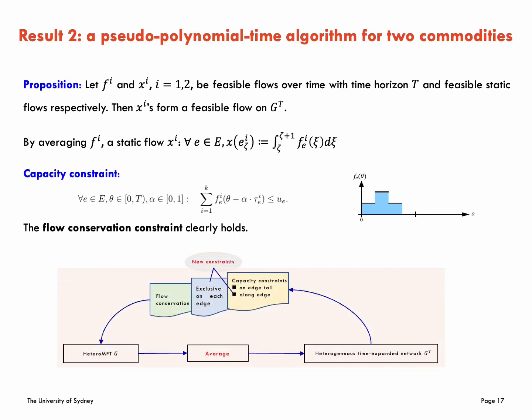At last, by a binary search to find optimal T, construct the time-expanded network, solve the corresponding static flow problem in time polynomial in the input size, and convert that static flow to a dynamic one using the procedure in Definition 3.